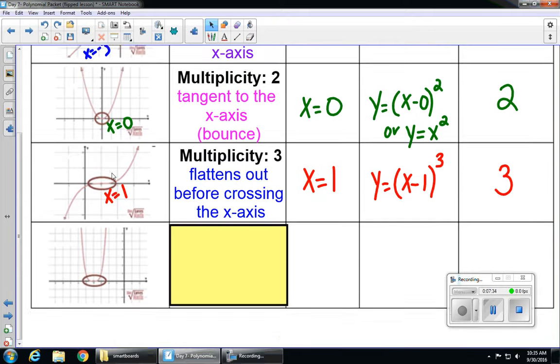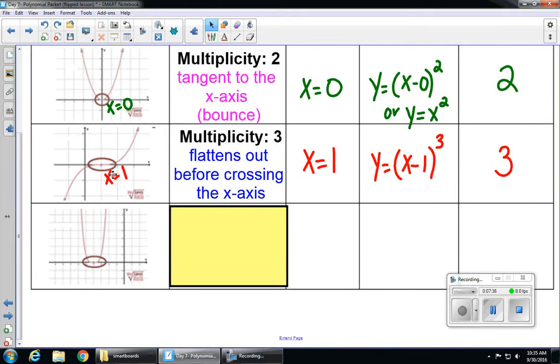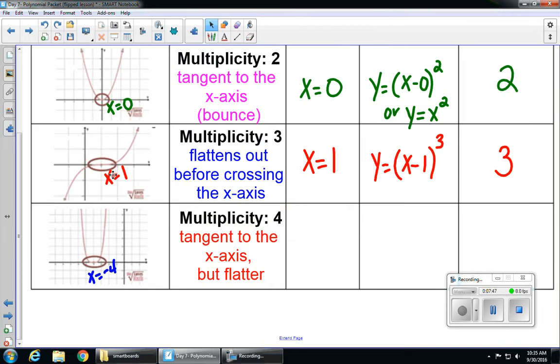Our last graph touches at x equals negative 4. This one looks a little bit similar to the multiplicity of 2, except this time it's a multiplicity of 4. Although it's tangent to the x-axis, it's not exactly the same as multiplicity of 2. It flattens out a little bit as it touches the axis, whereas multiplicity of 2 was a straight bounce. This one is a little bit flatter.